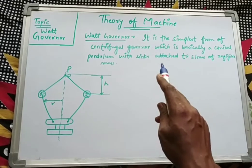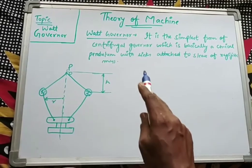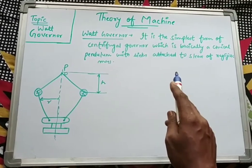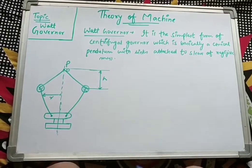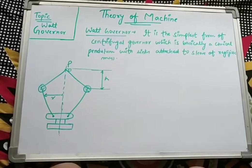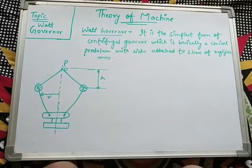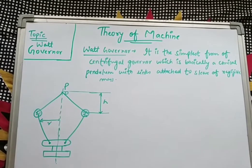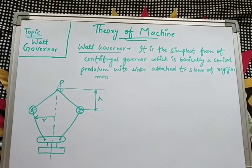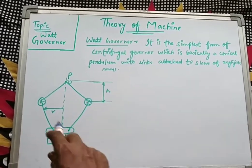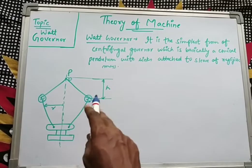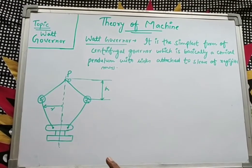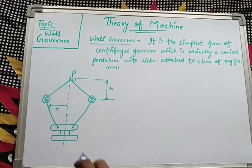The Watt governor has links attached to a sleeve of negligible mass - that means the masses attached are of negligible amount. As you can also see from the diagram, it simply looks like a conical pendulum.